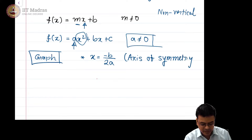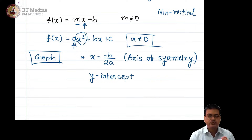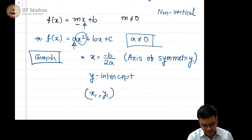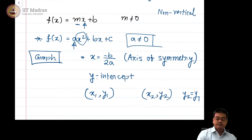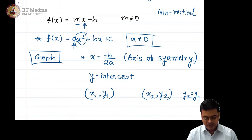First you figure out this point, then you figure out the y-intercept of this particular function. Then you choose any arbitrary point x₁ and figure out what y₁ is on this graph by substituting the values into the function. Then using symmetry, you figure out another point x₂, y₂ — where y₂ will essentially equal y₁ because of the axis of symmetry. Use these points, plot them on a graph paper, and figure out what is happening to the function. Graphing a quadratic function is very easy.